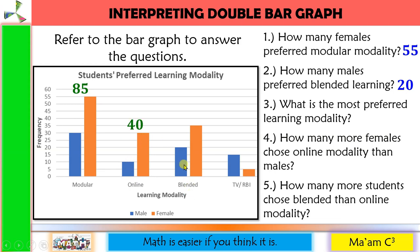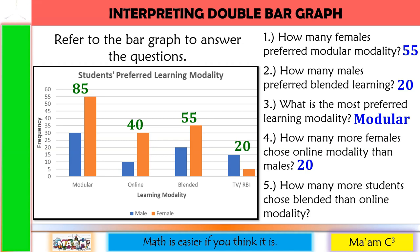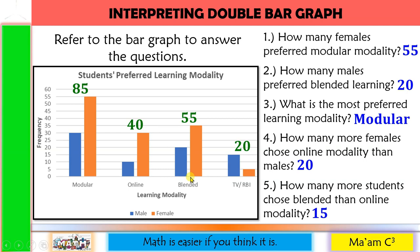For blended: 20 males plus 35 females equals 55. For TV or RBI: 15 males plus 5 females equals 20. So the most preferred learning modality is modular with 85 votes. Number four, how many more females chose online modality than males? Online: females is 30, male is 10. So 30 minus 10 equals 20. Number five, how many more students chose blended than online modality? Blended is 55, online is 40. 55 minus 40 is 15. So 15 more students preferred blended than online modality.